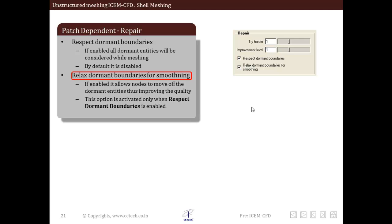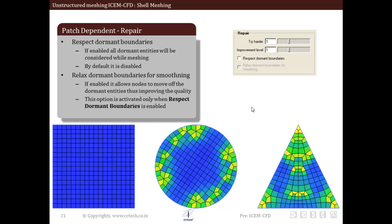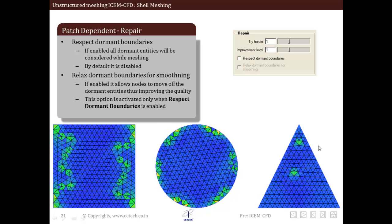At the end we will see some standard shapes meshed by using the patch dependent algorithm — specifically three shapes: a square, a circle, and a triangular shape geometry.